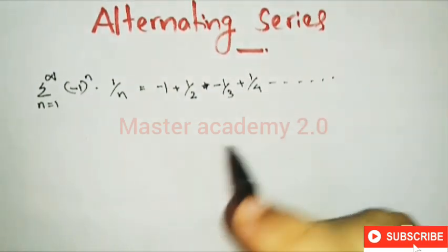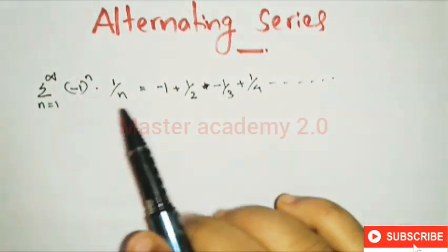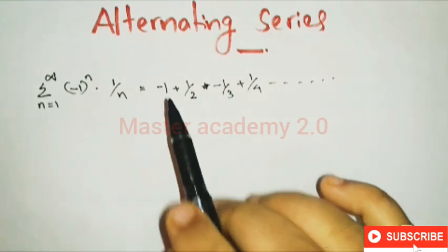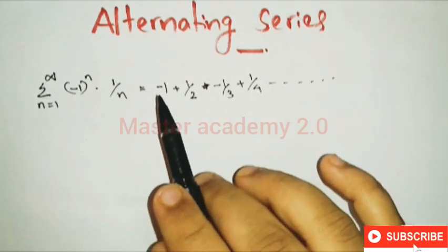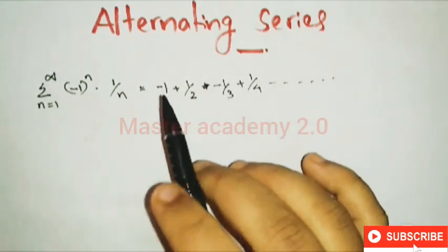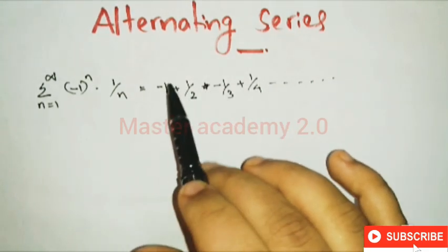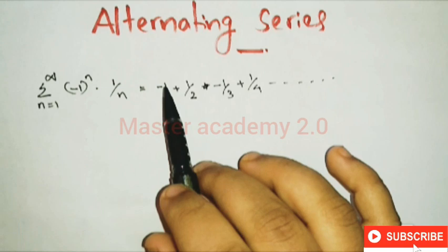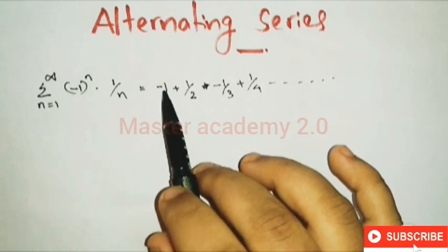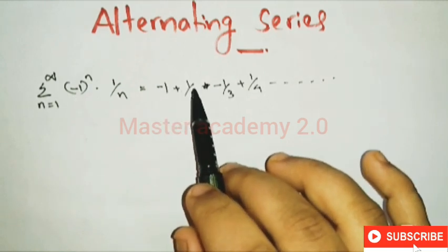In this series, the sign alternates and changes. The sign goes from minus 1 to plus 1 by 2, then minus 1 by 3, and so on — alternating between negative and positive.